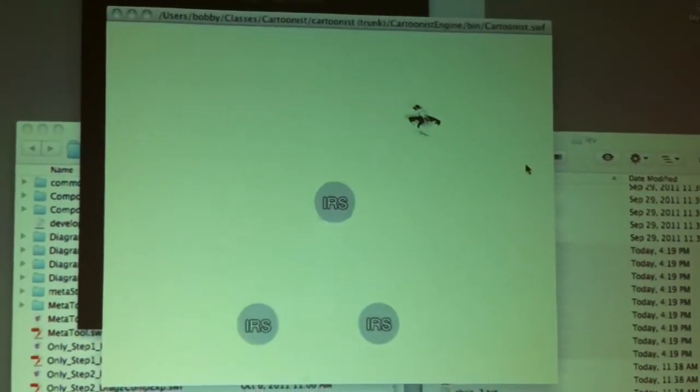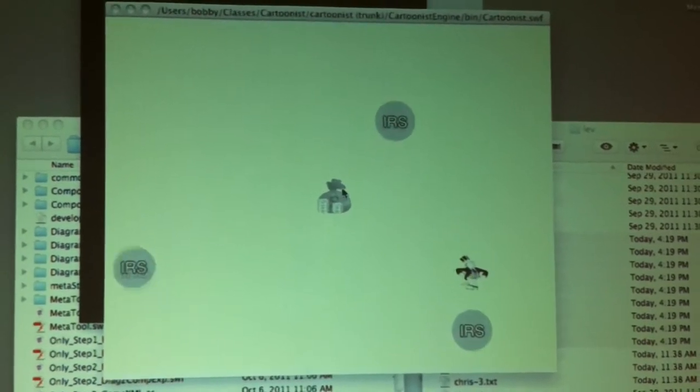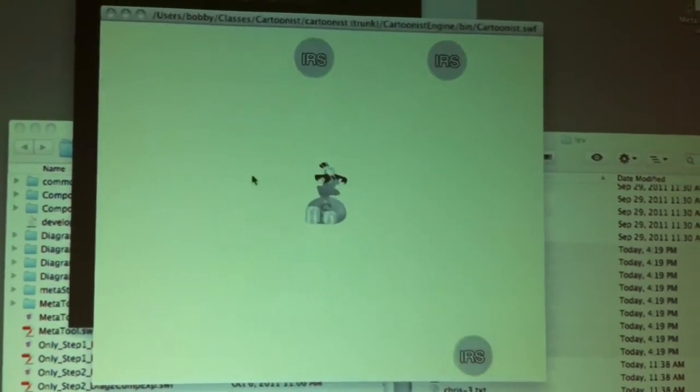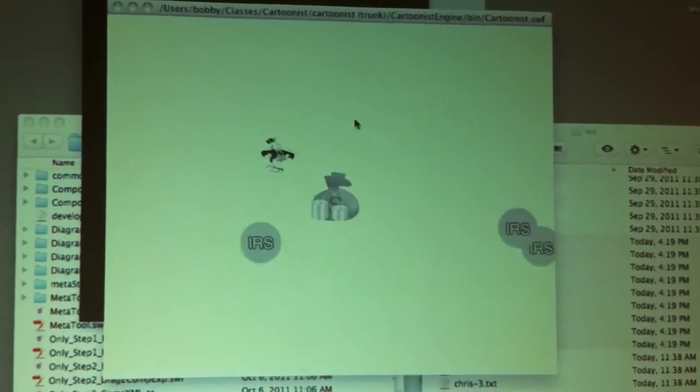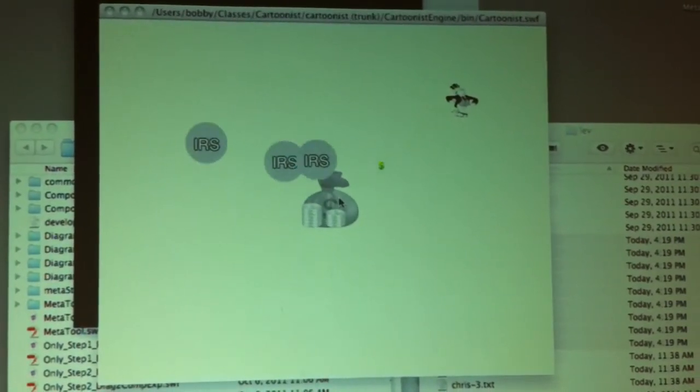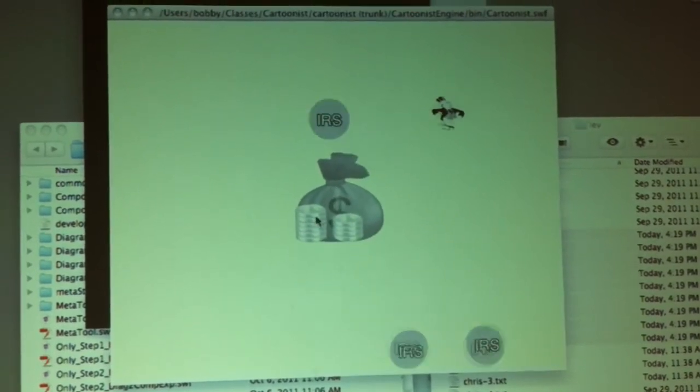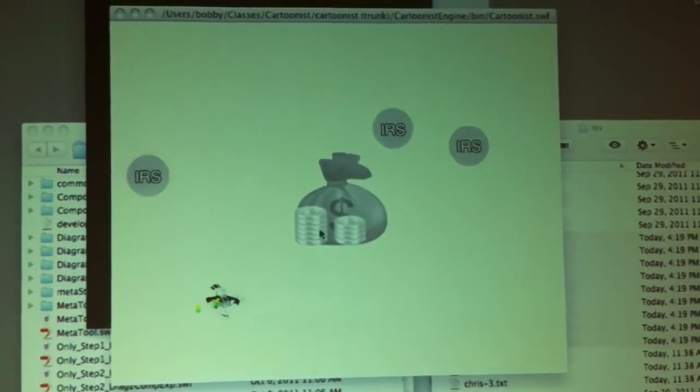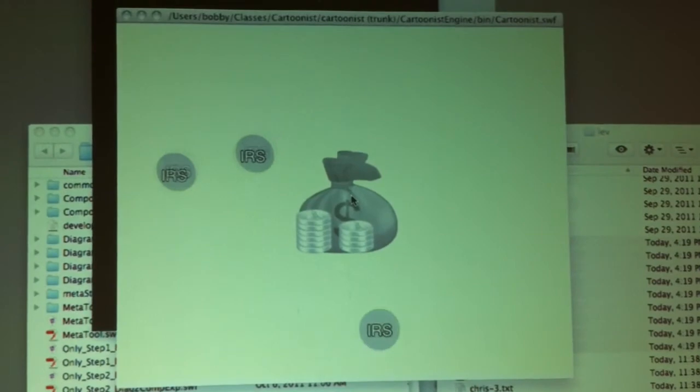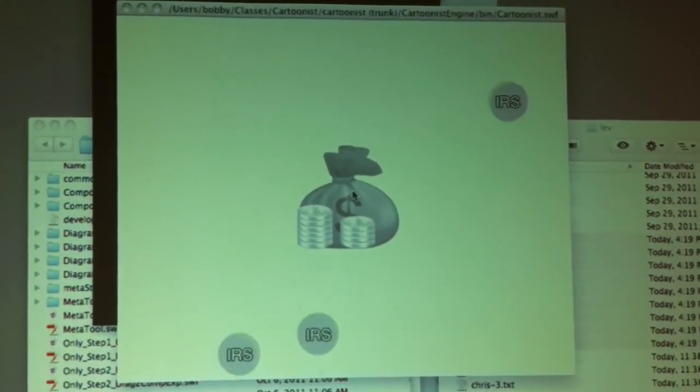So this is a game you play as a rich man and you're trying to grow your financial fortune. And you can see I'm shooting dollar signs at my fortune that's here in the middle, my big sack of money. And I'm trying to dodge the IRS at the same time and grow my wealth even larger. And if the IRS catches me, I disappear from the screen and that would be my game over.